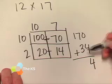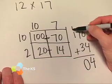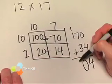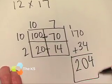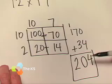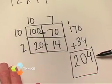0 plus 4 is 4. 7 plus 3 is 10. Bring that 1 up here. And we bring the 1 down. And don't forget that 1 that we carried, which makes it 2. 204. The same answer we got in the traditional way and the breakdown way.